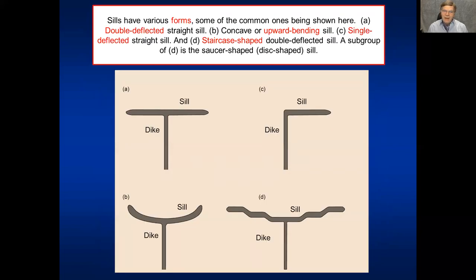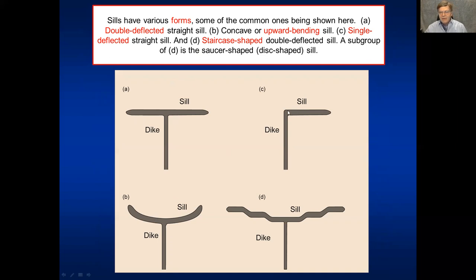Sills have many types and geometric forms. In (a) we have a double-deflected straight sill, in (b) an upward-bending sill, in (c) a single-deflected straight sill, and in (d) a staircase-shaped sill, which includes as a subgroup the well-known saucer-shaped or disc-shaped sill.